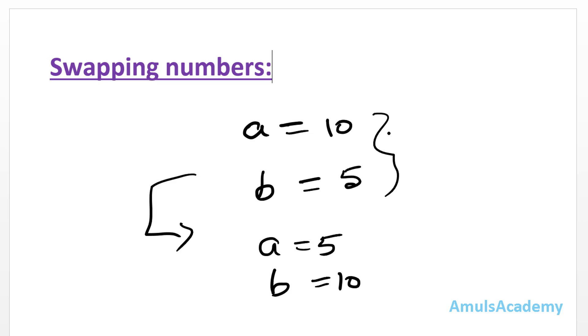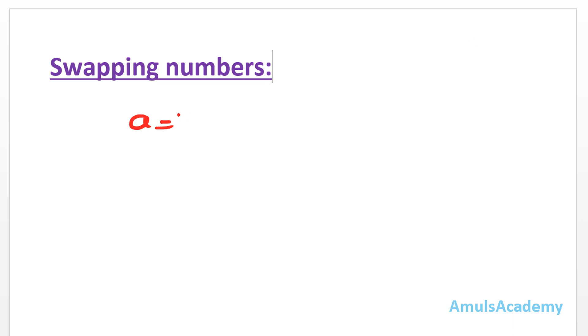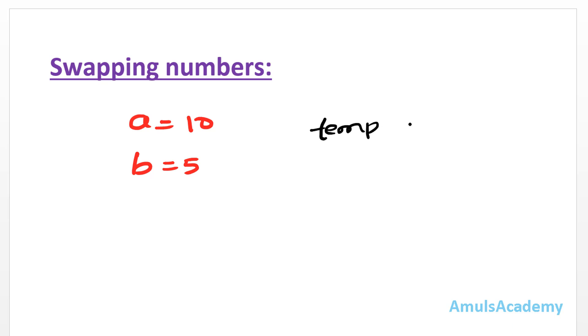We will see the first method — swapping using a third variable. First we take the input: a is 10, b is 5. Then I take a third variable called temp, and I assign the value of a to it.